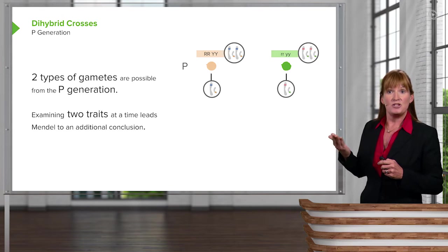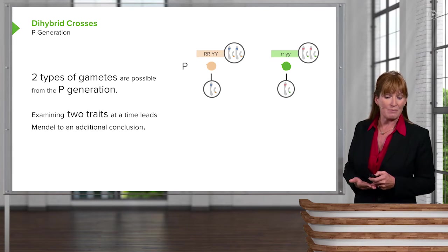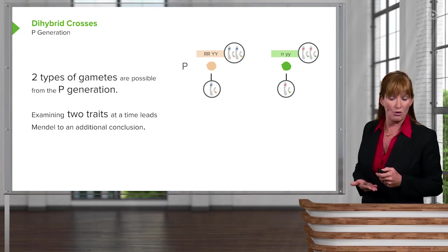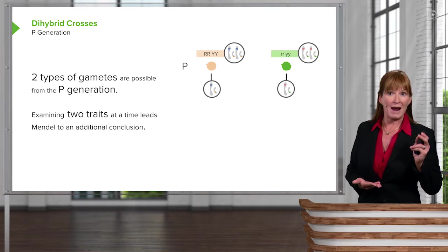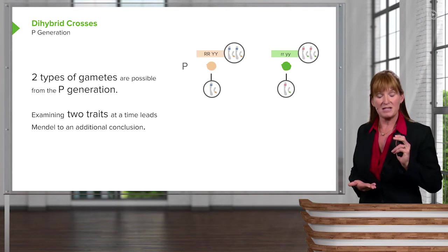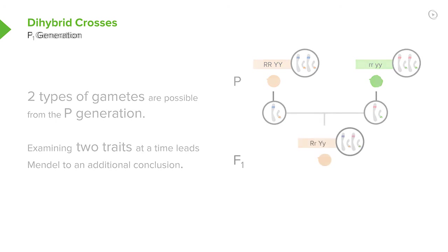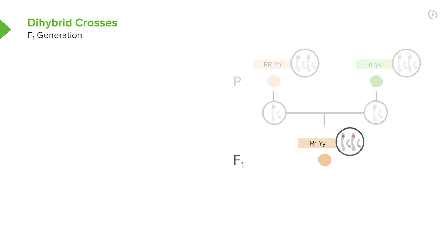So we have two types of gametes that could be formed from these true breeding parents in which one parent could only form round dominant, yellow dominant gametes, and the other parent could only form green and wrinkled gamete information. When those two come together to form the F1 generation, we have an individual that is heterozygous at both loci, both locations.